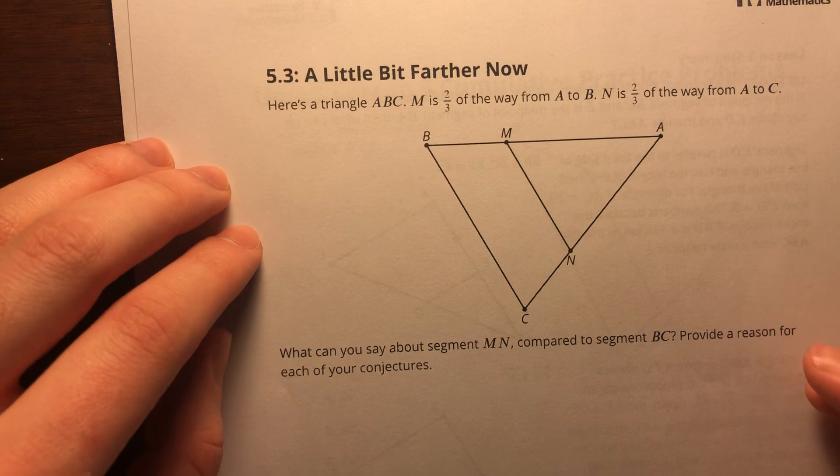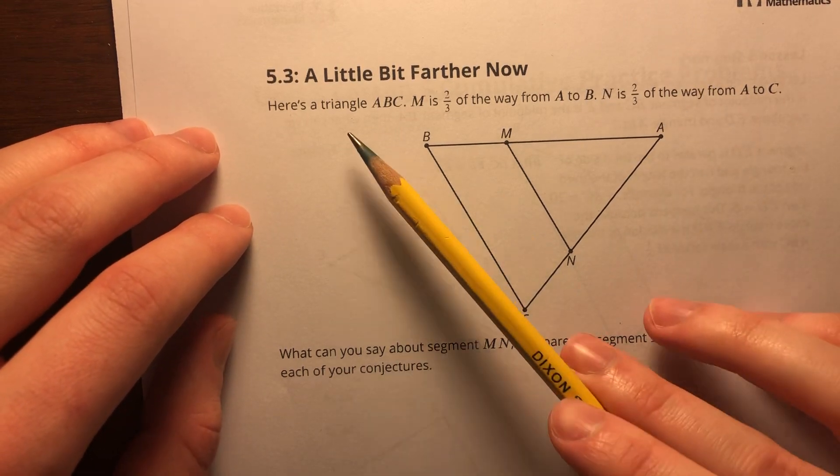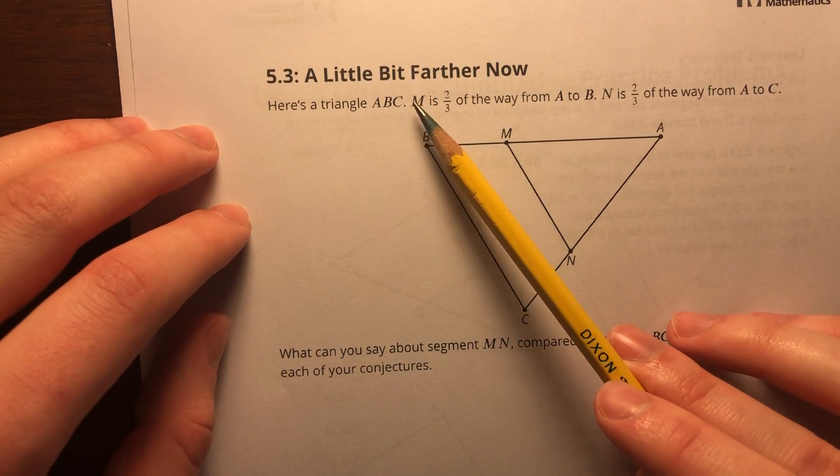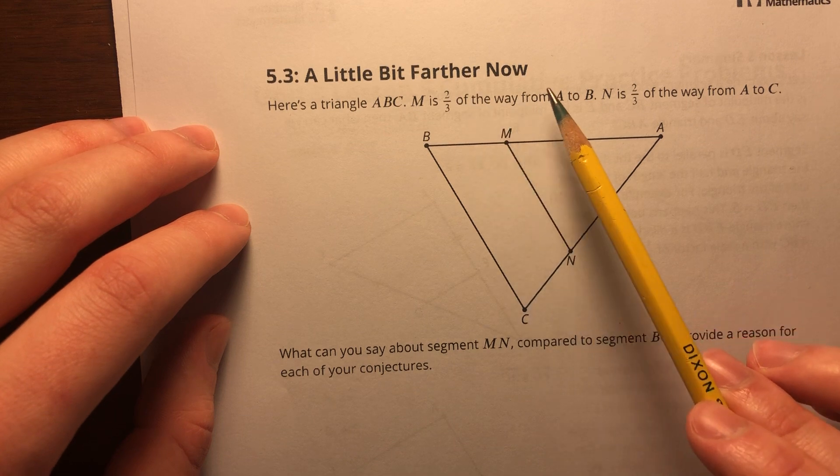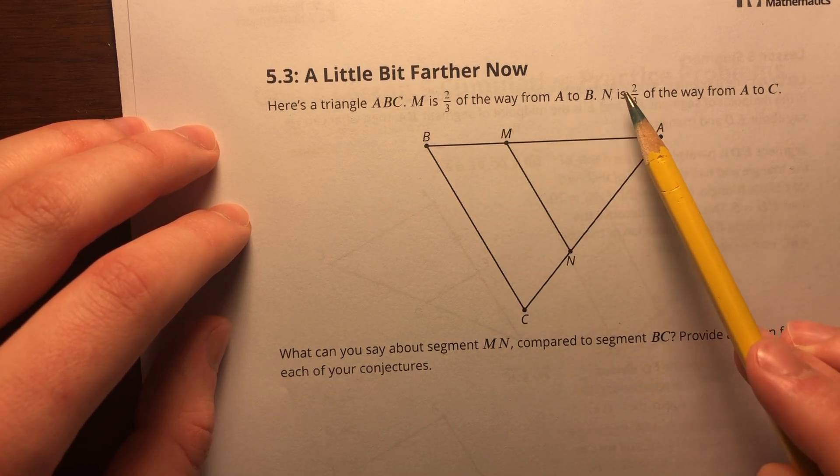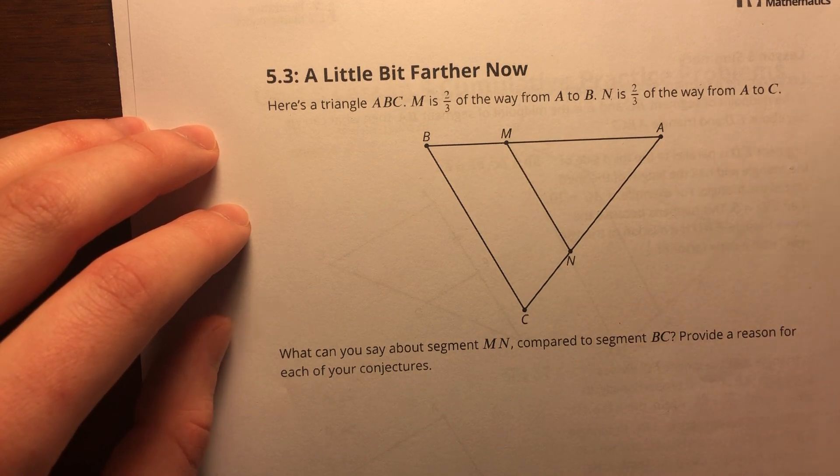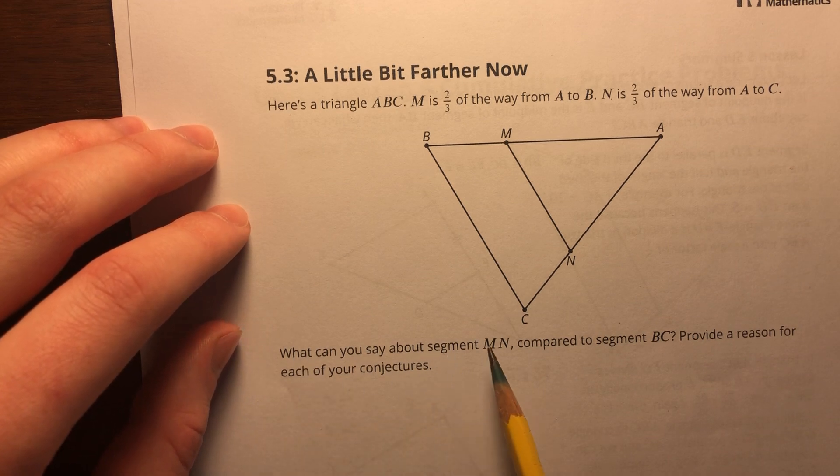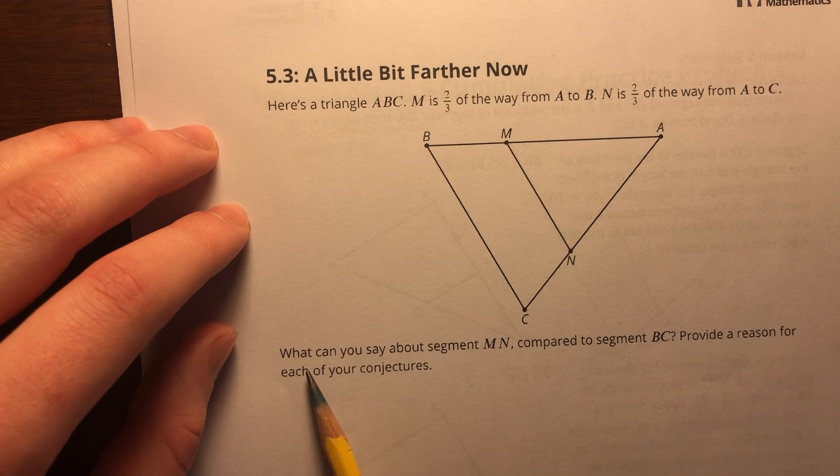Alright, 5.3, A Little Farther Now. Here's triangle ABC. M is two-thirds of the way from A to B. N is two-thirds of the way from A to C. What can you say about segment MN compared to segment BC? Provide a reason for each of your conjectures.